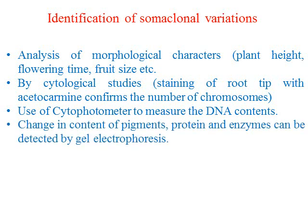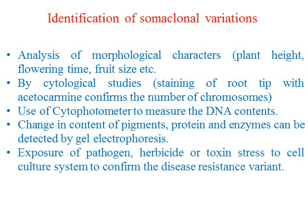On the basis of pigment, protein, and enzymes, you can detect the amount of pigment, protein, and enzymes of the new plant via gel electrophoresis, then compare it to the mother plant. If there is a difference, that means they are showing physiological changes — that means it is showing somaclonal variation. Next, you can expose your new plant to a herbicide or toxin. If the mother plant is not resistant but the new plant tolerates and survives, then the new plant is a variant — it is something different from the mother plant, and we call it somaclonal variation.